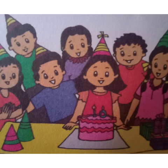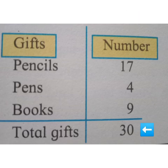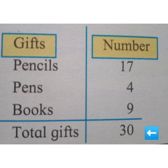Sonu told Nandu the names of all those who had come. Tony said, let us see the gifts first — we can answer Nandu's questions later. Tony put the gifts into groups. Salma counted the books, Sonu counted the pens, Tony counted the pencils. Nandu wrote down the information on a slate: pencils 17, pens 4, books 9 — total gifts 30. Sonu said, so I got 30 gifts in all. Tony said, hey, this has become a table!